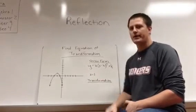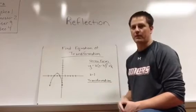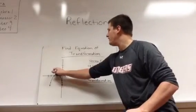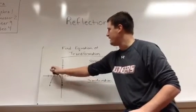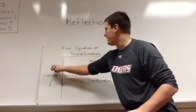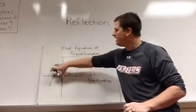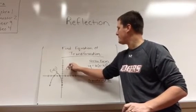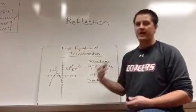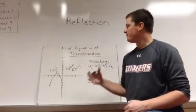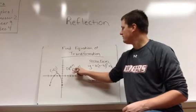I have vertex form, which we learned in the past, y equals a times x minus h squared plus k. Right now we're going to use everything with an a value of 1. So what we want to do here is just kind of identify what's changed. Well, the vertex is right here. And that vertex is now at negative 2 and it's at positive 1. Also what I can see here is that it's opening down.